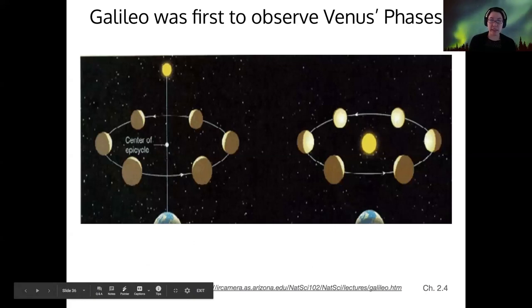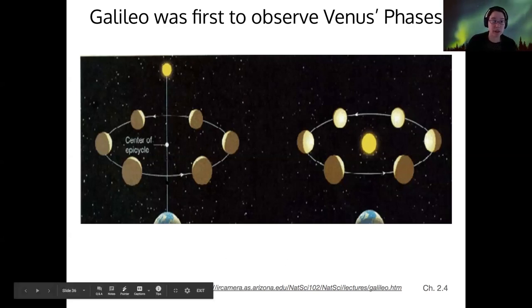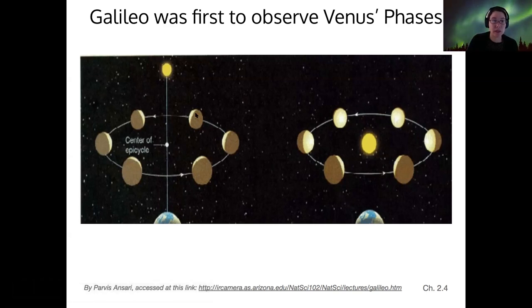Galileo was also the first to observe Venus's phases, and this was really the nail in the coffin for the geocentric model. If we look here at a geocentric model, Earth is being orbited by Venus and then by the Sun, which is farther away. In the geocentric model, the Sun would always be illuminating the side of Venus that's far away from Earth, and so we would only ever see crescent phases.